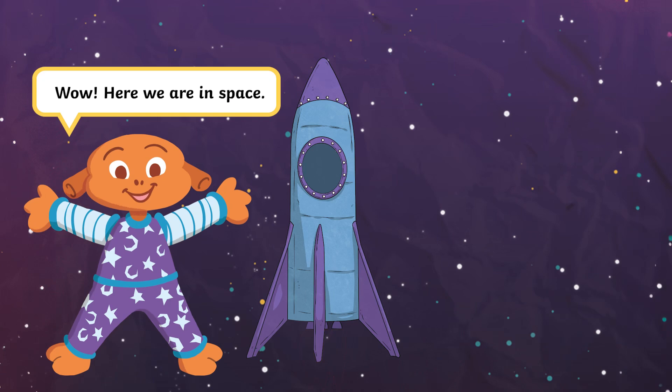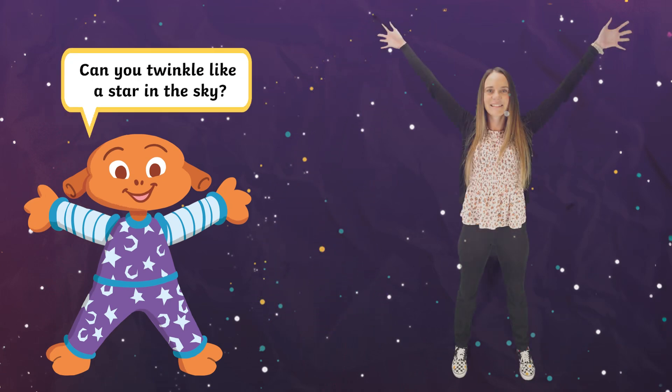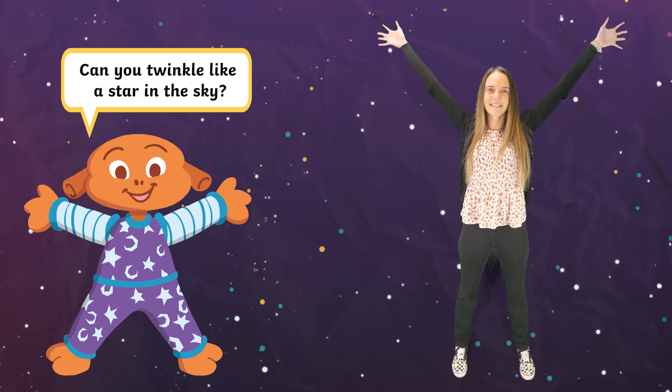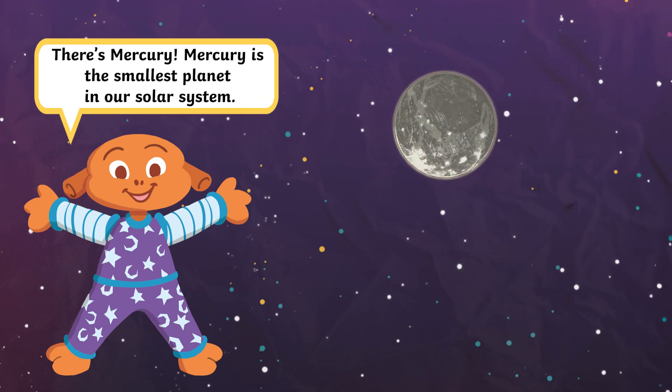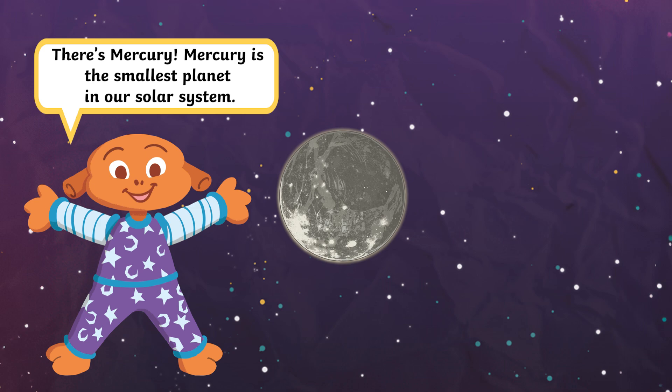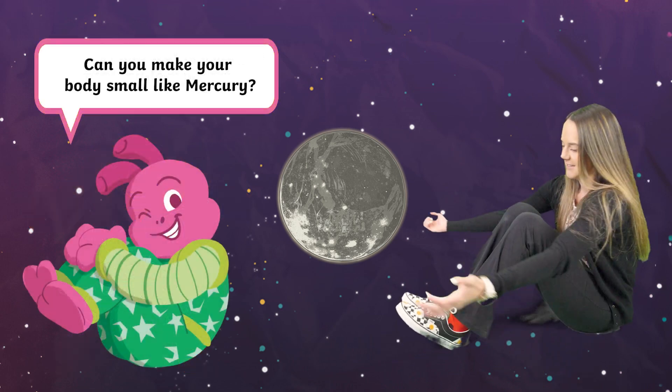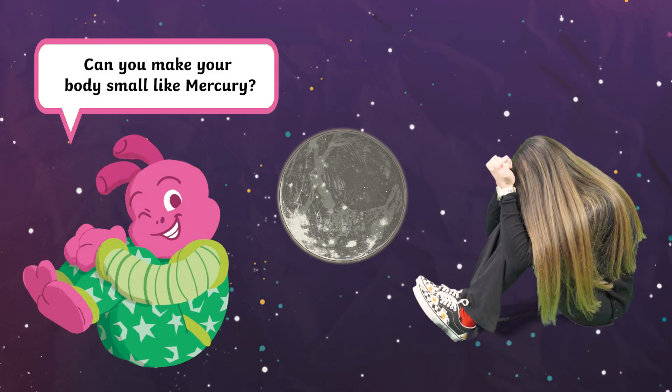Here we are in space. Can you twinkle like a star in the sky? There's Mercury. Mercury is the smallest planet in our solar system. Can you make your body small like Mercury?